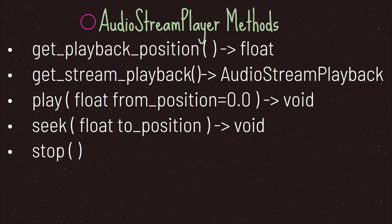Moving back to the AudioStreamPlayer class, it has five methods. get_playback_position returns where you currently are in your music file. get_stream_playback returns an AudioStreamPlayback data type. The play method takes one optional argument — it plays your audio file starting at the position you pass in; if no position is passed, it starts at the beginning. The seek method takes one argument and sets the playback position to that value.